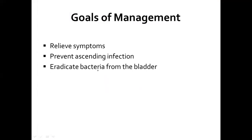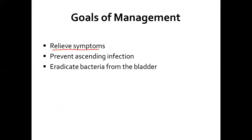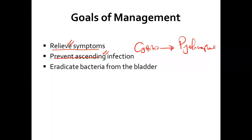When it comes to management, your aim is first to relieve the pain and symptoms. You also don't want the infection to ascend further — we don't want cystitis to progress and become pyelonephritis, as that complicates things even further. So the three goals are: relieve the symptoms, prevent ascending infection, and eradicate the entire batch of bacteria causing the problem in the bladder.